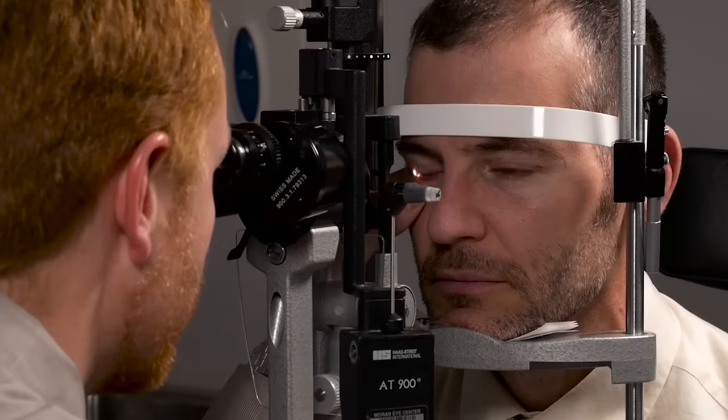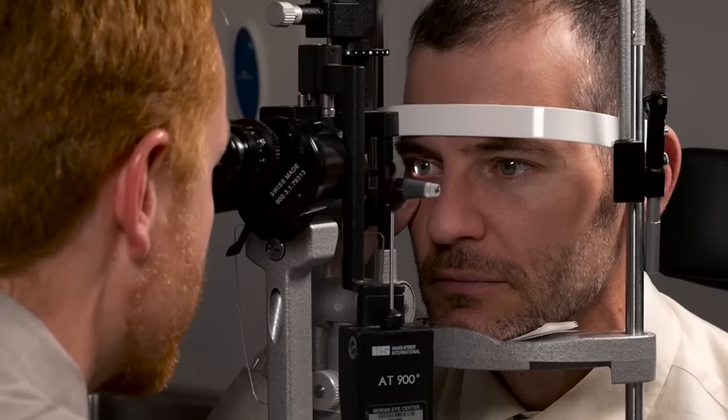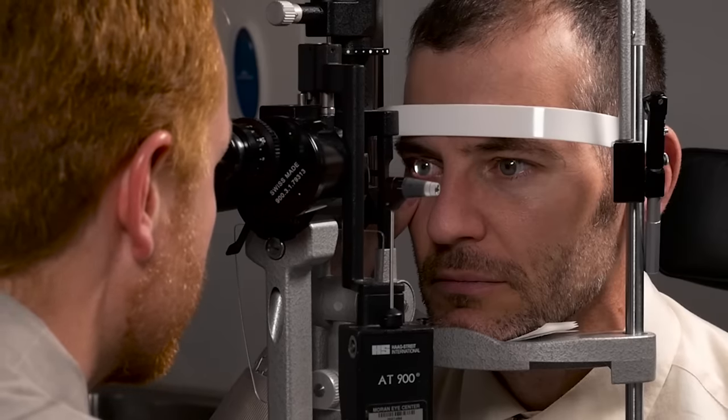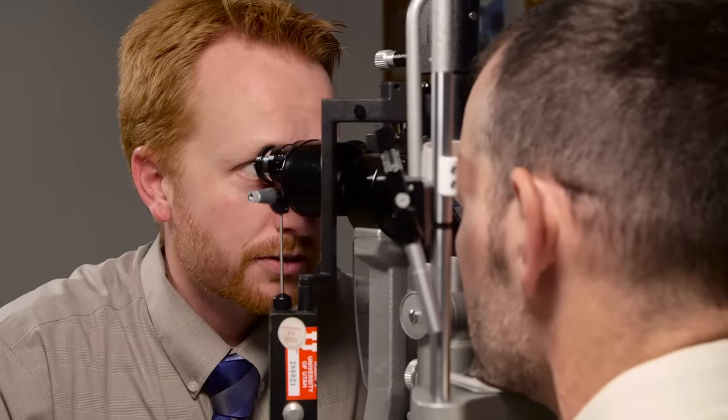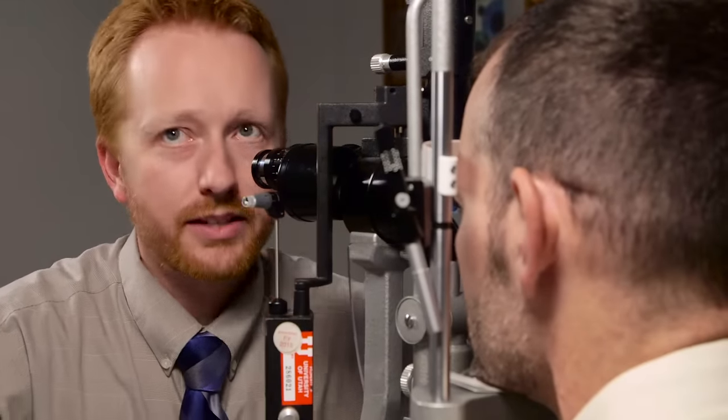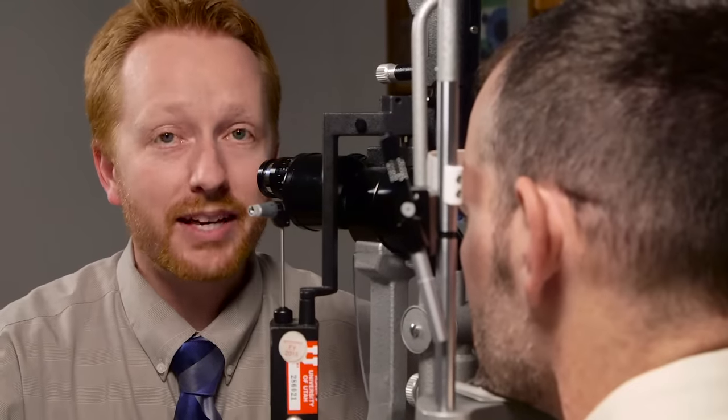Now ideally, you would like the contact lens to move a little bit, maybe 0.1 to 0.2 millimeters, but not too much, because if it's too much, then it'll be uncomfortable. Blink. Another important thing is to make sure there's full limbal coverage and that the contact lens extends beyond the limbus onto the conjunctiva and it's not rubbing against the limbus.